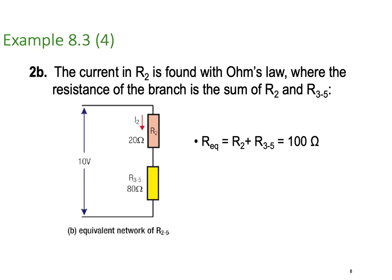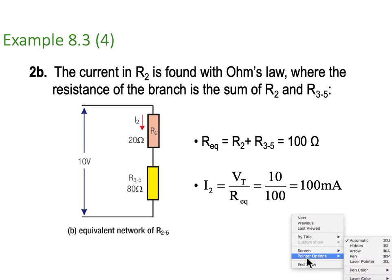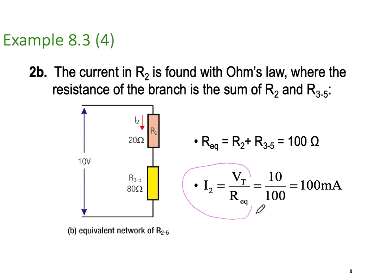We've reduced it down and we've found out there's 100 Ohms, and there's the math. I2 equals V total divided by the resistance which we work out to be 100 Ohms. It turns out to be 100 milliamps. Just simple application of Ohm's law. I equals V on R.